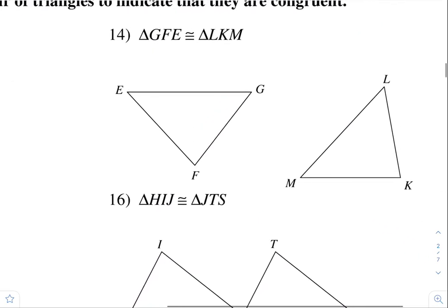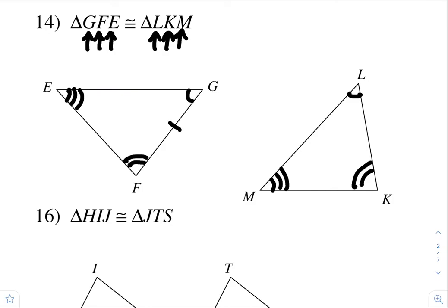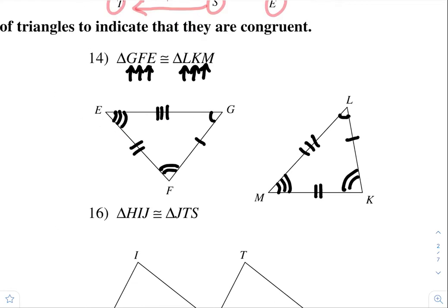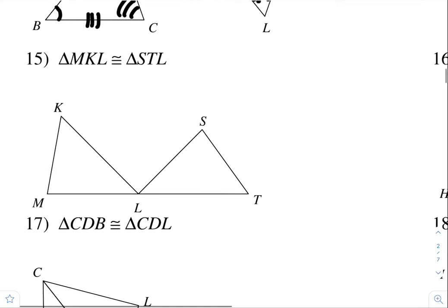Number 14. Angle G is congruent to angle L. Angle F is congruent to angle K. Just going in order. And angle E is congruent to angle M. Now for the side lengths: GF is congruent to LK, FE is congruent to KM, and EG is congruent to ML. I'm just looking at my triangle congruency statement and denoting the corresponding parts that are congruent to each other.